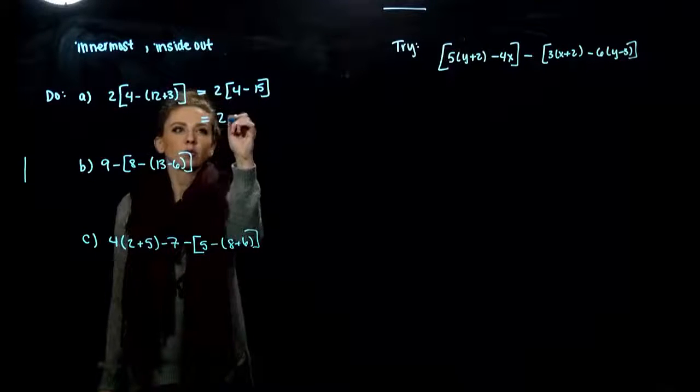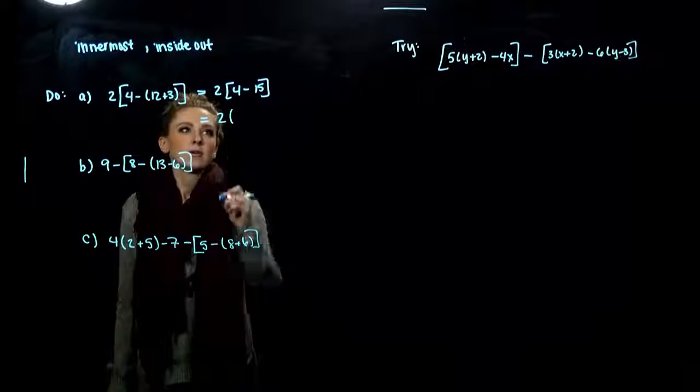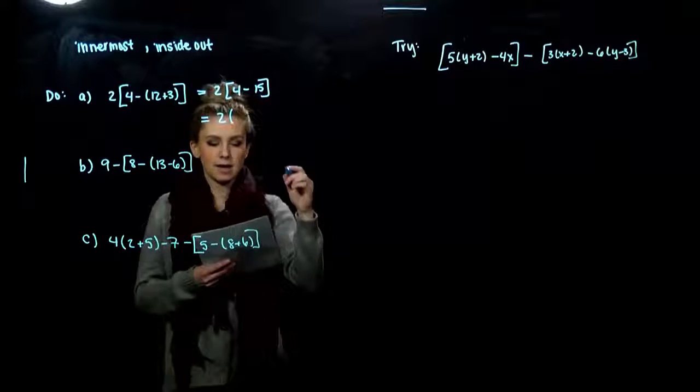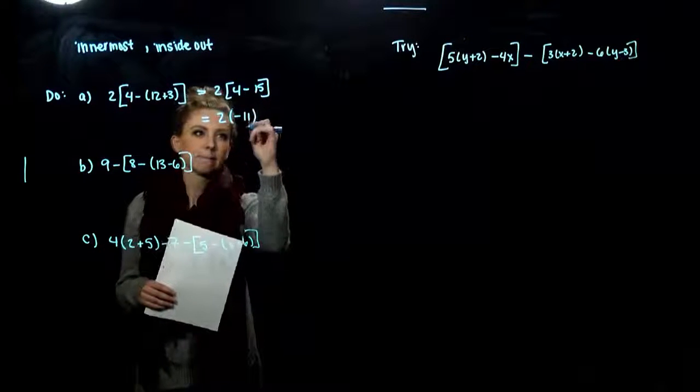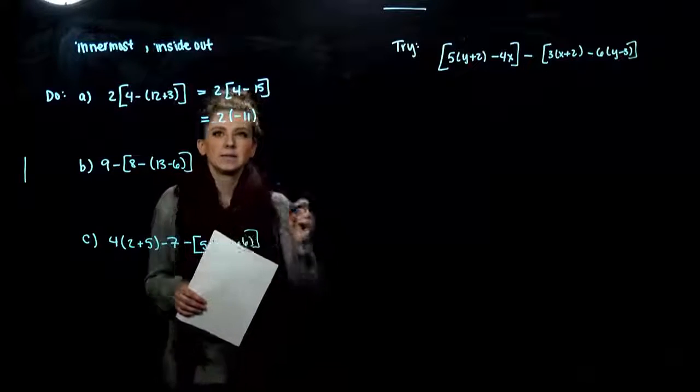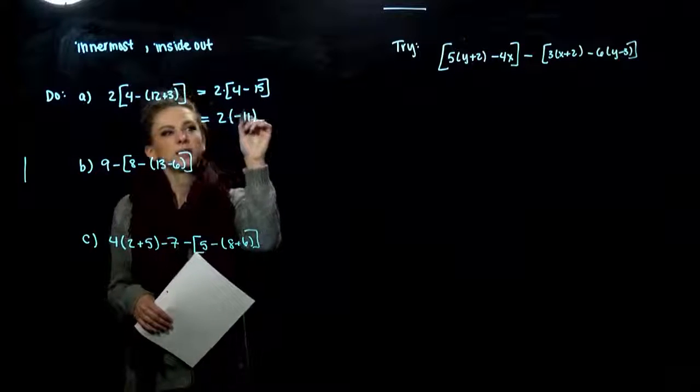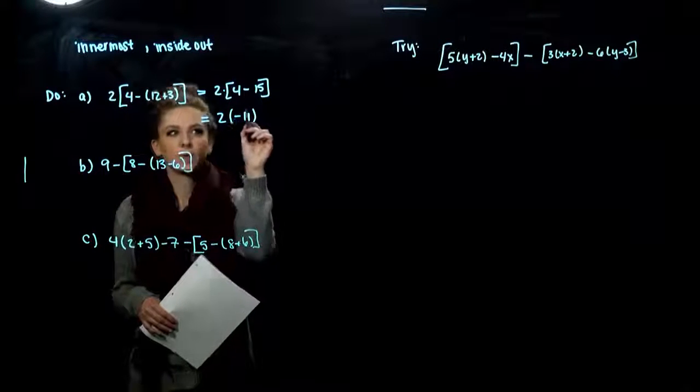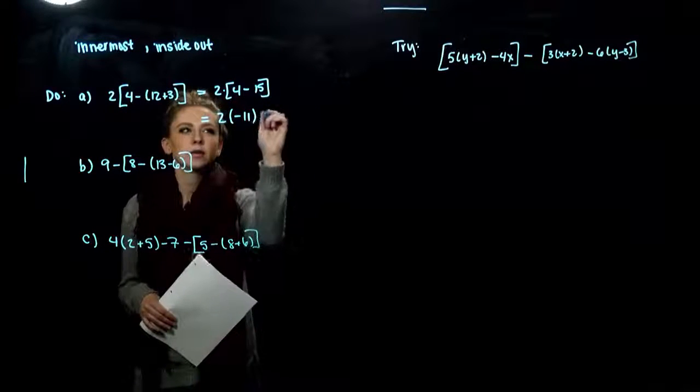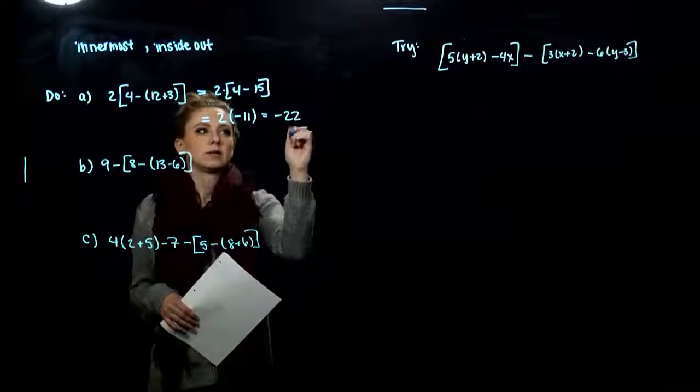Now we need to work on the inside of these. If I combine 4 minus 15, we're looking at minus 11. And since we didn't explicitly say a multiplication out there, it's implied with those parentheses. So we still have to group them together, but we've simplified on the inside. So this result is negative 22.